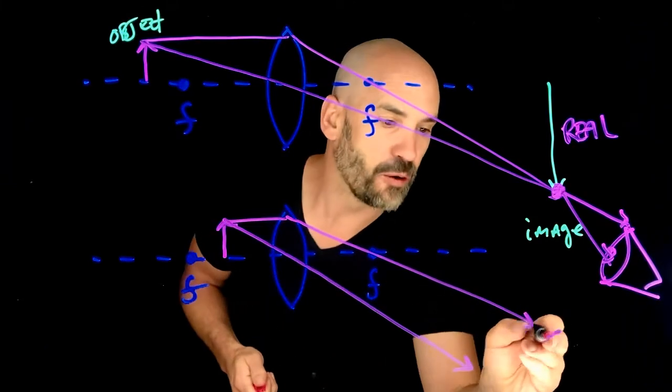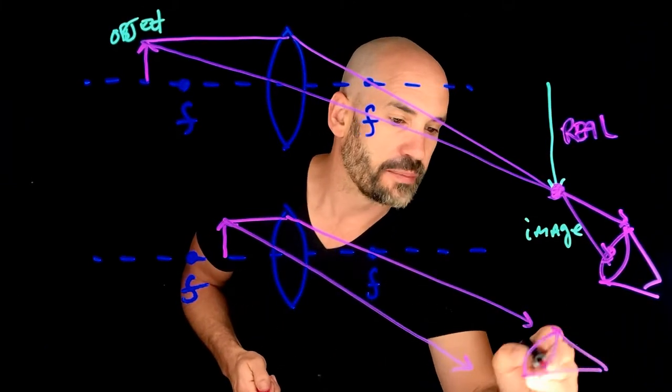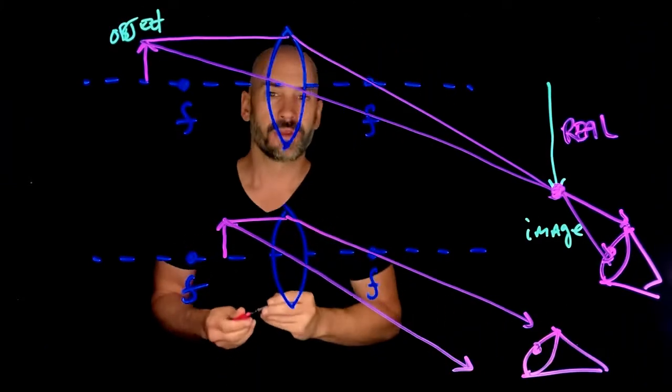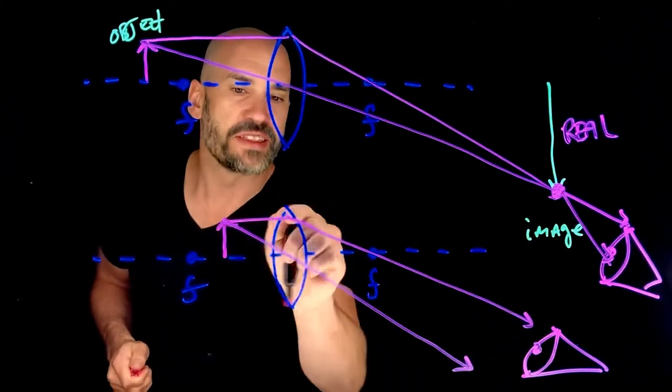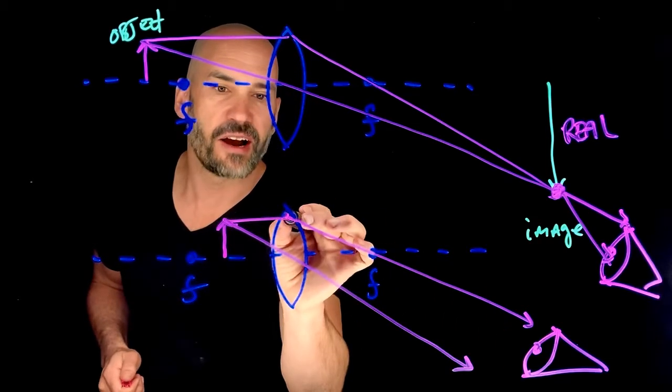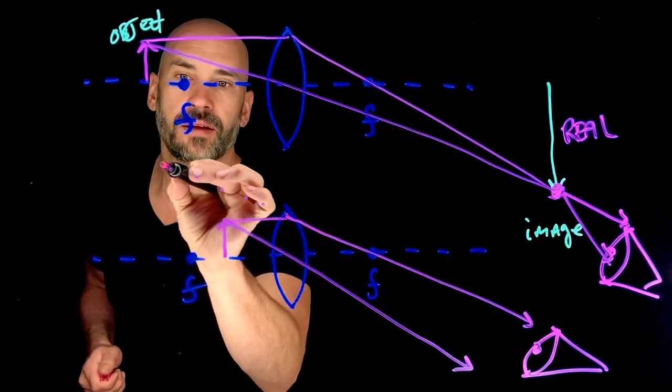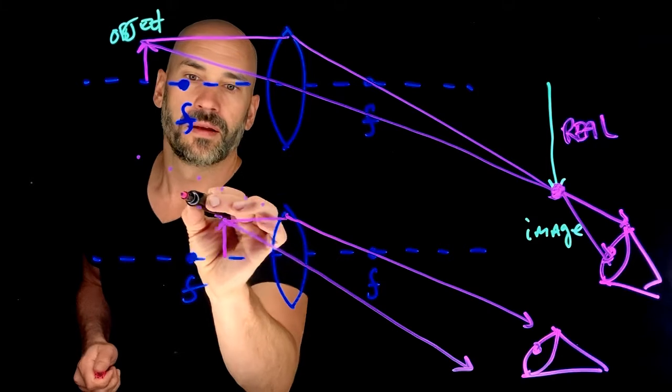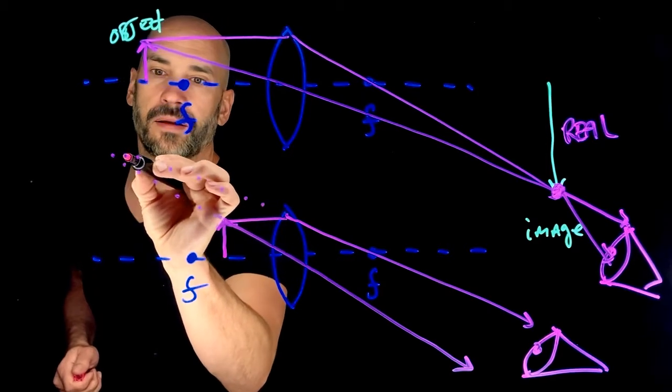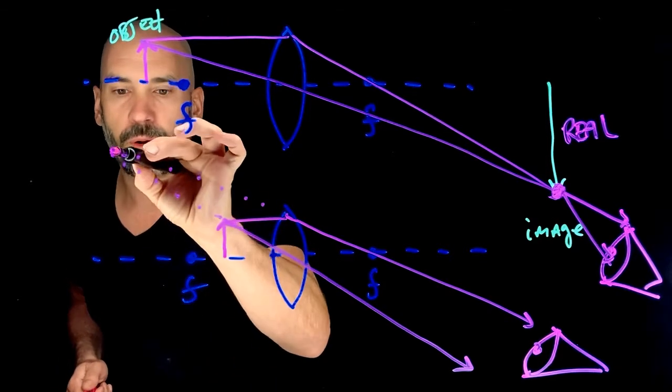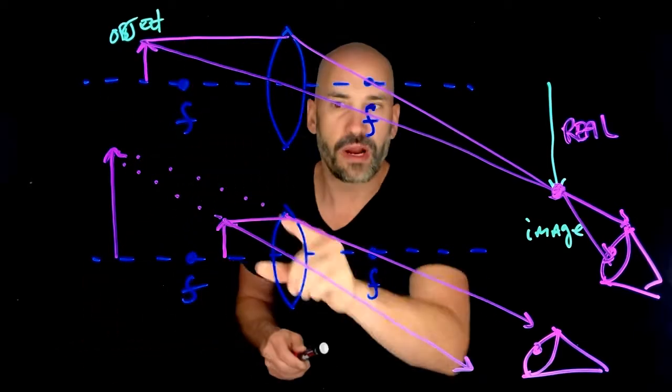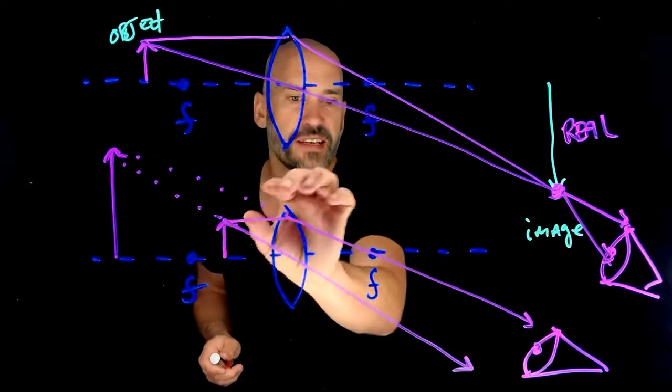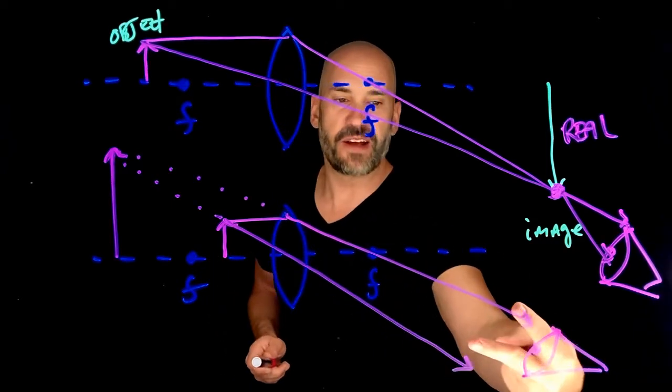So now if I have an eye over here and I'm taking a look at this whole thing, what I'm really seeing is it appears as though these light rays are emanating from some point over here.